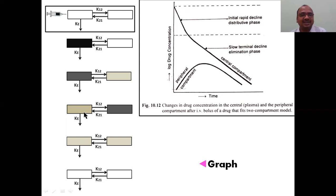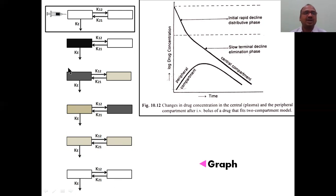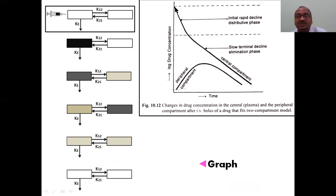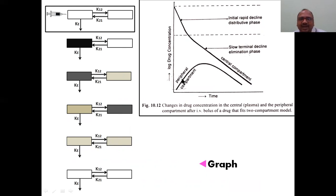Distribution continues — concentration in the peripheral compartment increases while the central compartment decreases. Then redistribution also occurs. During this phase, elimination is always ongoing, so both compartments eventually become empty. The curve for the central compartment starts at a high concentration and gradually declines. The curve for the peripheral compartment first increases then decreases, giving a characteristic rise-and-fall curve. That is the graph for the two-compartment model.